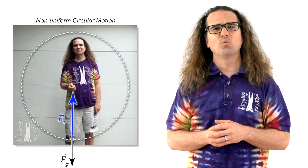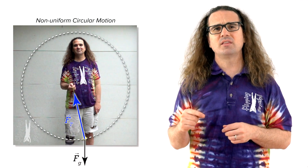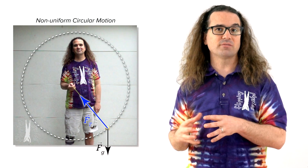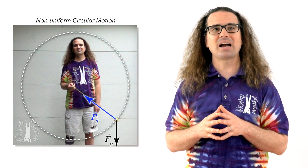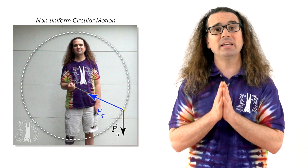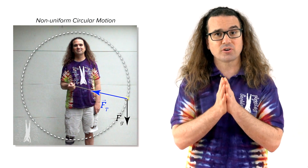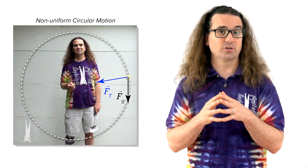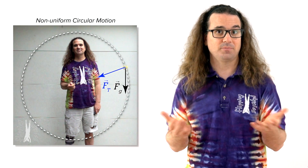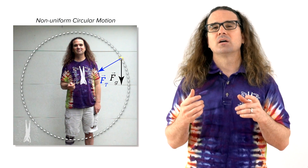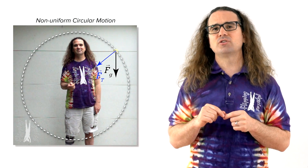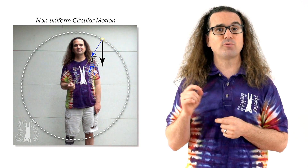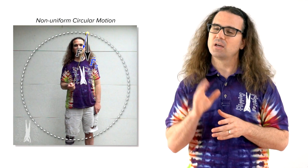Good morning. We already discussed the general magnitudes and directions of forces acting on a ball moving in a vertical circle in non-uniform circular motion like this. Today, we are going to find an equation for the force of tension in the string.